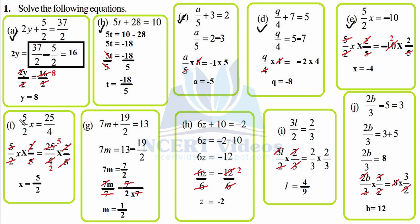Now 5 over 2 x equals 25 over 4. To get rid of 5 by 2, multiply with its reciprocal 2 by 5, and do the same on the right-hand side. 5 and 5 cancel, 2 and 2 cancel, x as it is equals 25 over 4 times 2 over 5, which gives 5 over 2. So x equals 5 over 2.